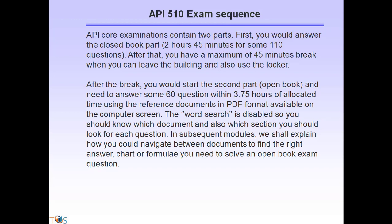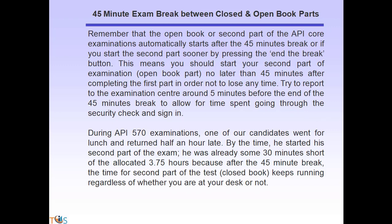API core examinations contain two parts. First, you answer the closed book part — 2 hours 45 minutes for 110 questions. After that, you have a maximum 45-minute break during which you can leave the building and use your locker. After the break, you start the second part — open book — answering 60 questions with 3 hours 45 minutes allocated, using reference documents in PDF format on the computer screen. The word search function is disabled, so you need to know which document and section to look in for each question.